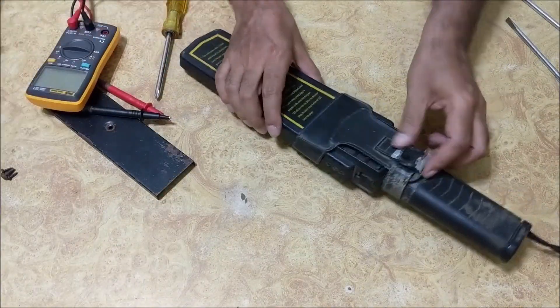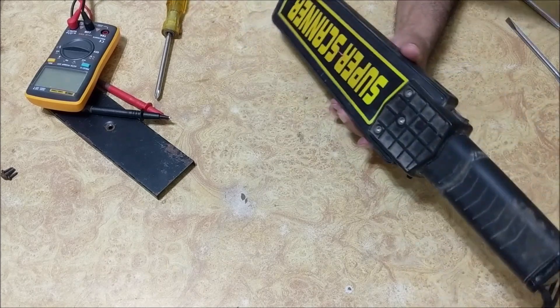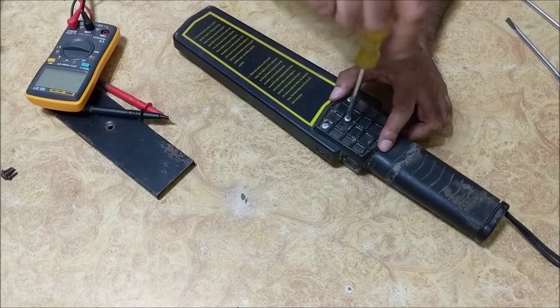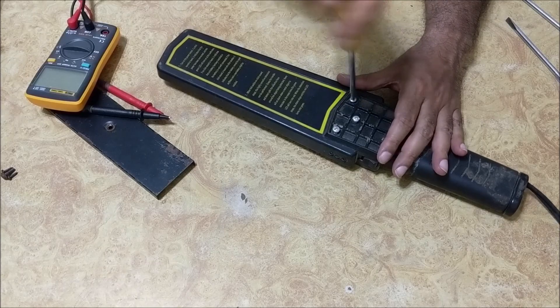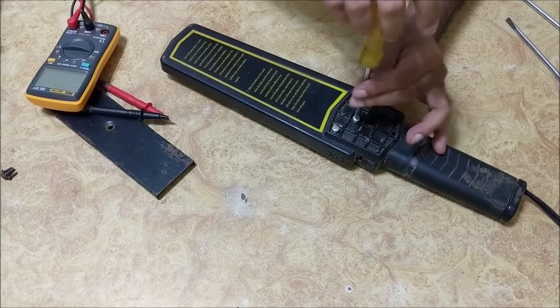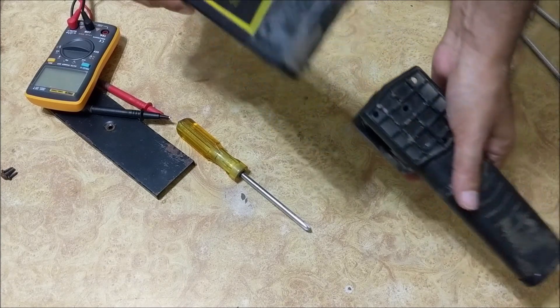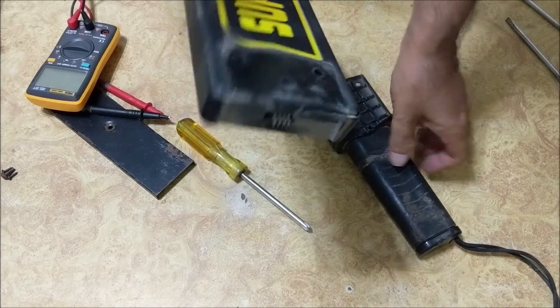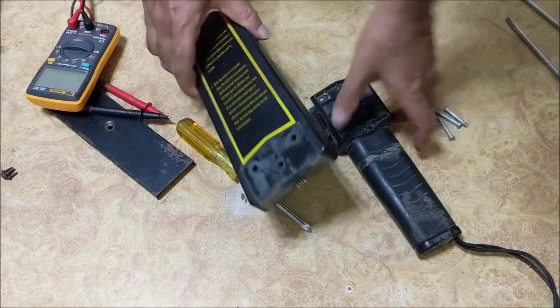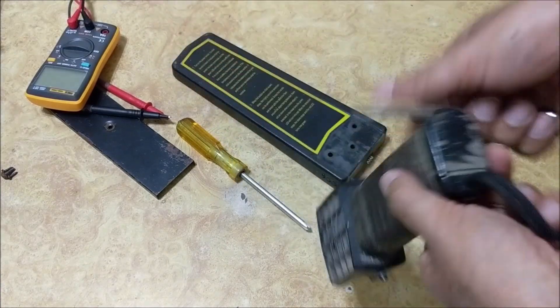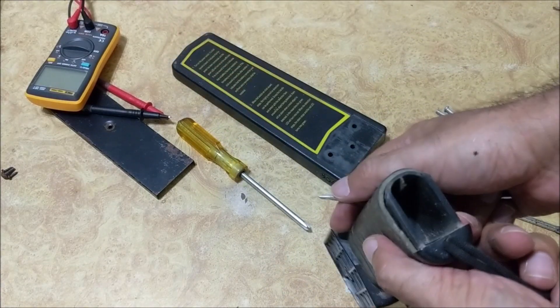Let us open this metal detector also. This contains coils and indicators. This is its battery compartment.